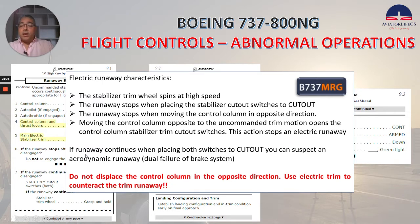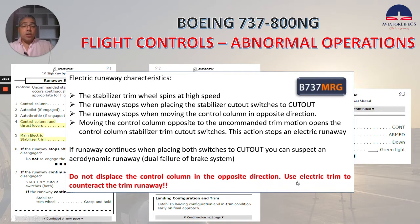If the runaway continues when placing both switches to cutout, you can suspect an aerodynamic runaway — a dual failure of the brake system. Do not displace the control column in the opposite direction. Use electric trim to counteract the trim runaway.